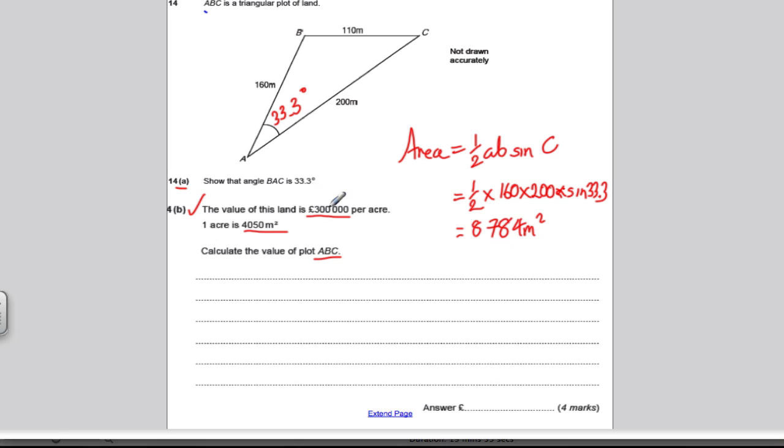We know how much it costs per acre, so we need to work out how many acres this is. Well, one acre is 4,050, so we do 8,784 divided by 4,050 to work out how many acres. And we're getting about 2.17 acres. So what's the value of the land? Well, the value is therefore 300,000, how much it is per acre, times how many acres we've got, which is 2.17 odd. And you get something like 650,693 pounds. Probably best round it to one significant figure, I would say, because the answer is given in one significant figure. So that would be approximately 700,000 pounds to one significant figure.